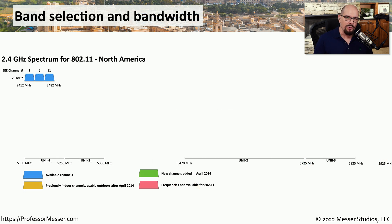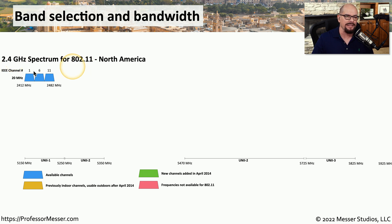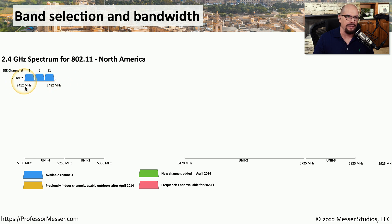We often see the 2.4 gigahertz and 5 gigahertz networks compared with 802.11. Let's look at a visual representation of why the 5 gigahertz networks are so popular. Starting with 2.4 gigahertz networks — these are commonly seen as IEEE channels 1, 6, and 11. These are three separate 20 megahertz bandwidths that range from 2412 megahertz through 2482 megahertz, and that's where we get the 2.4 gigahertz band information.